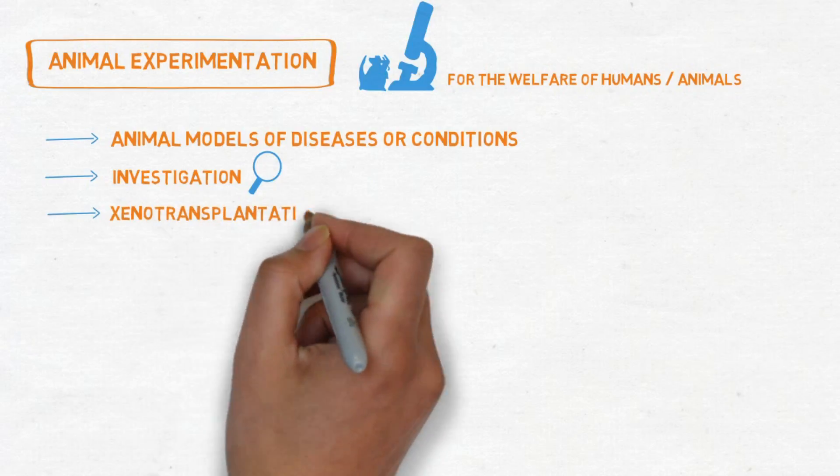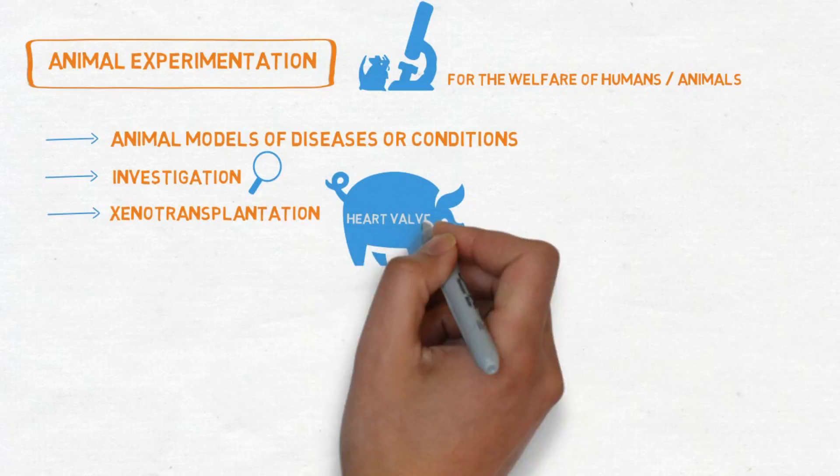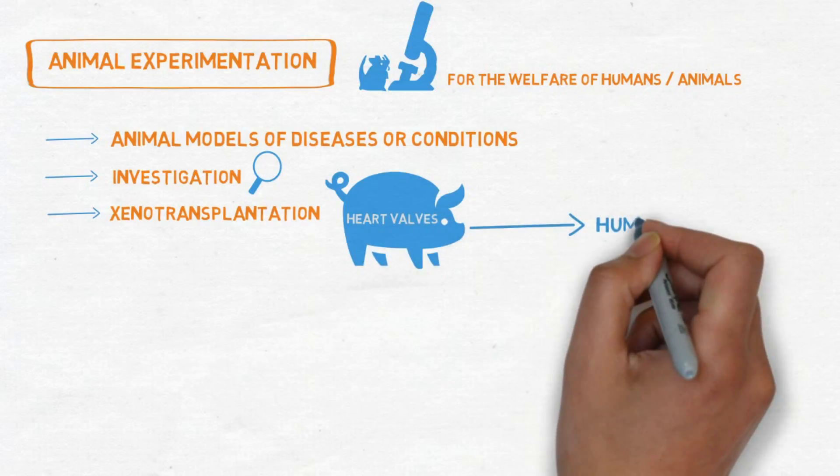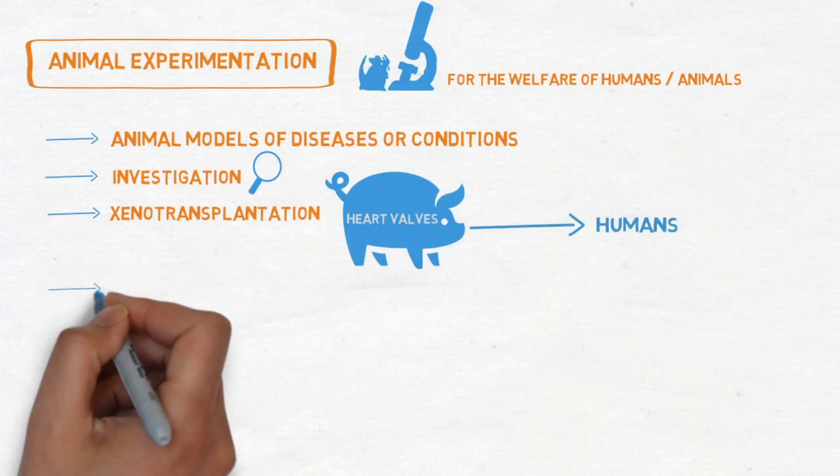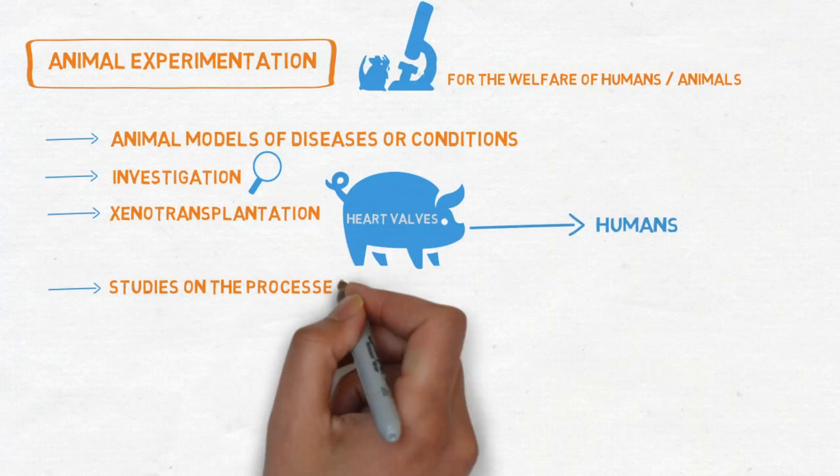Xenotransplantation research or transplanting tissues or organs from one species to another, as a way to overcome the shortage of human organs for use in organ transplants, studies on the process of formation and development of embryo and growth and development of animals.